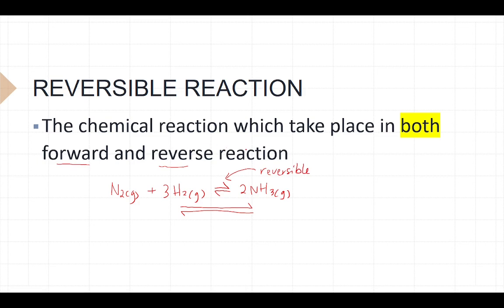Not all reactions are reversible. For example, carbon solid burned with excess oxygen is non-reversible because the product CO₂ does not revert back to O₂ or carbon. Another example: when you burn a piece of paper, the paper becomes black but you cannot change that black paper back to white again. That is non-reversible — that's the difference.